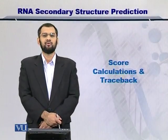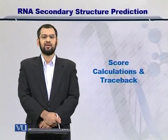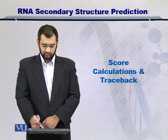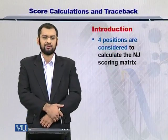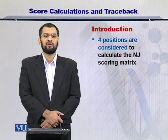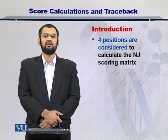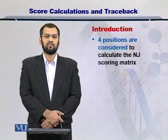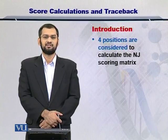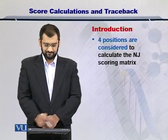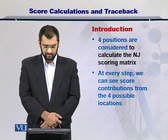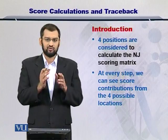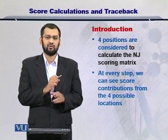Dear students, now we will look at the scoring scheme and the traceback strategy for the NJ algorithm. Once you have filled up the entire matrix which contains the scores, then you need to trace it back. As you would remember, there are four positions that are considered for filling up each position in the matrix, and these contributions are put down and you take the maximum one from these four.